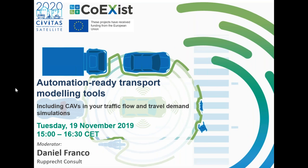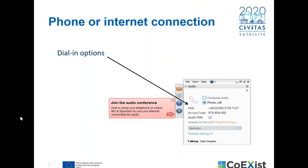Today we will learn about the automation-ready transport modeling functionalities developed within Coexist, and we will address the challenge of including connected and automated vehicles in traffic flow and in travel demand simulations. Before we start, I would like to explain a bit about the functionalities of our webinar system.